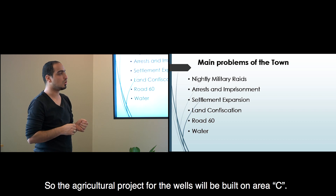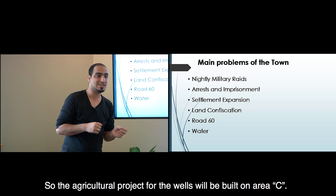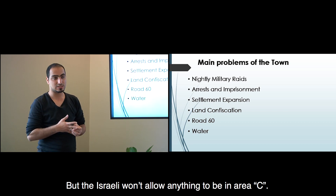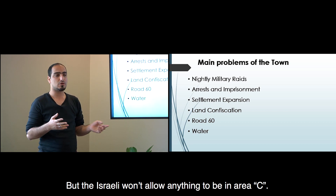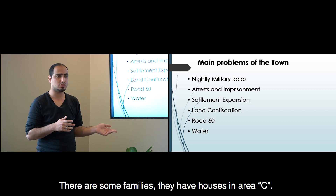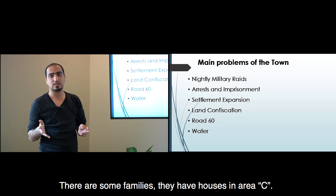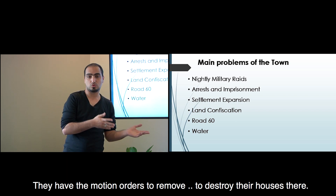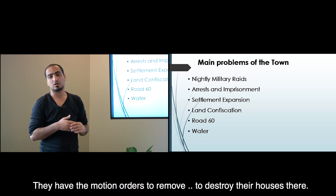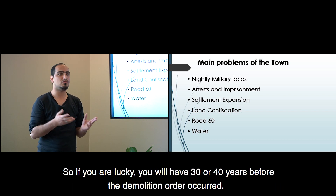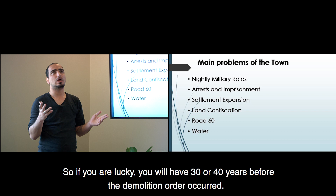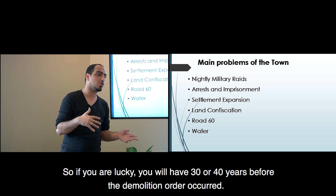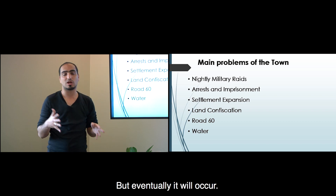The agricultural projects would be built in Area C, but the Israelis won't allow anything in Area C. Some families have houses in Area C and have received demolishing orders to destroy those houses. If you are lucky, you will have 30 to 40 years before the demolishing order is carried out - but eventually it will happen.